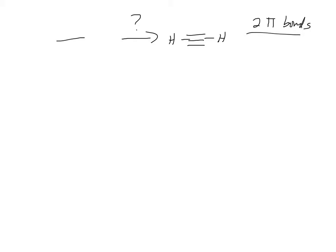You guys only know one way to make a pi bond. What kind of reactions make pi bonds? Eliminations. If you have two of them, you need to do two eliminations. So one step back from here, you're going to need to have two leaving groups, two bromines on there.